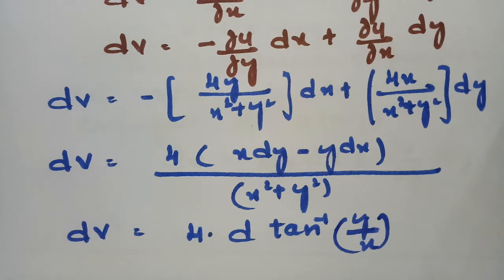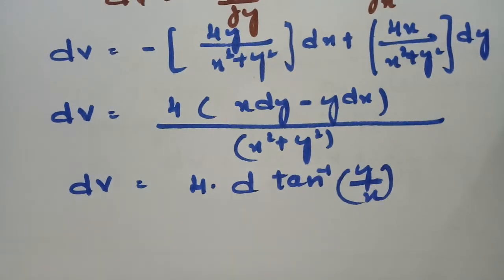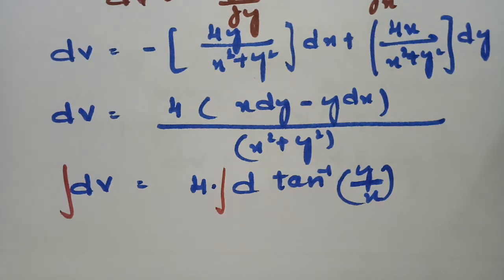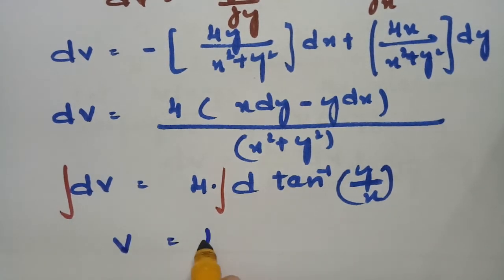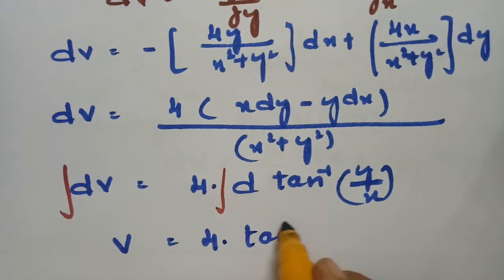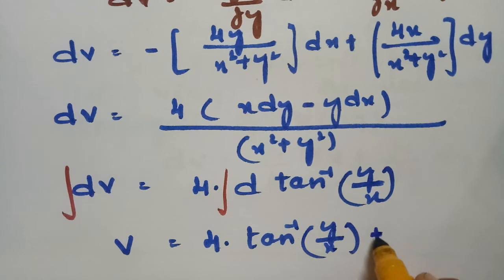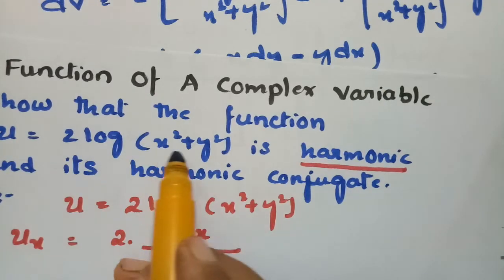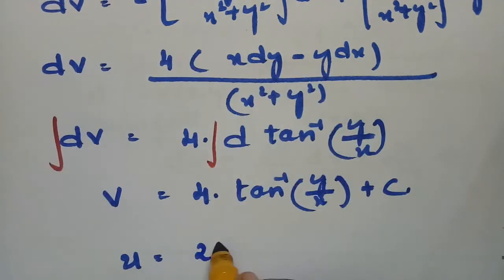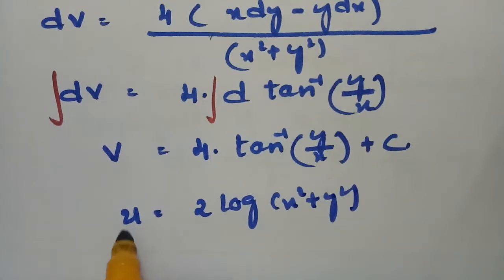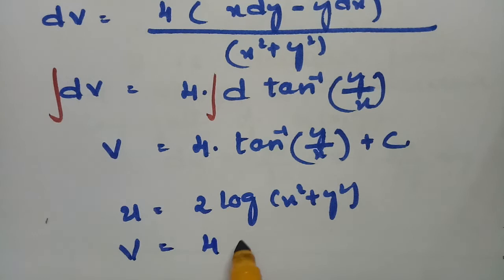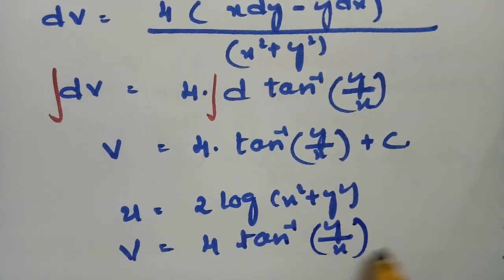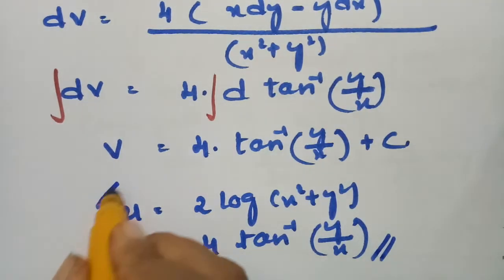This expression can be written as 4 times the derivative of tan inverse of y by x. So dv equals 4 times d(tan inverse of y by x). Integrating both sides, integration and derivative cancel, and integral of dv is v. Therefore, v equals 4 times tan inverse of y by x, plus some constant c. So v, the harmonic conjugate of u, equals 4 tan⁻¹(y/x) + c, while u equals 2 log(x² + y²).